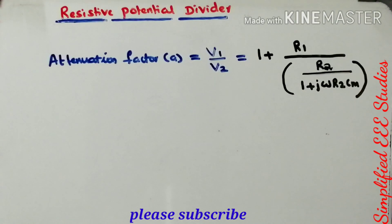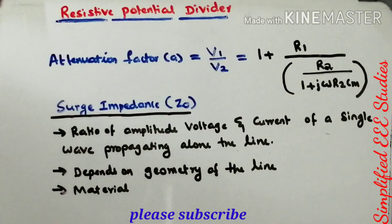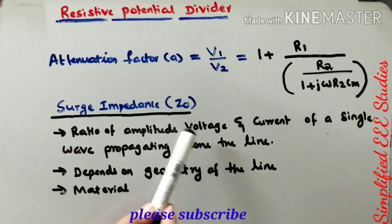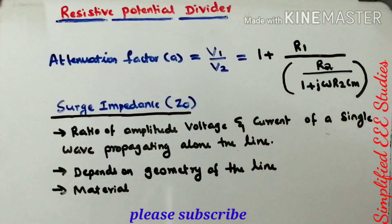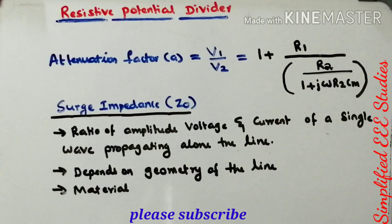The meter capacitance Cm typically lies between 10 pF and 50 pF. When designing a resistive potential divider, another important parameter is the surge impedance or characteristic impedance, denoted Z0 — the impedance of the delay cable or coaxial cable. Surge impedance is defined as the ratio of the amplitude of voltage to current of a single wave propagating along the line. It depends on the geometry and material of the line, and must be taken into consideration during design.